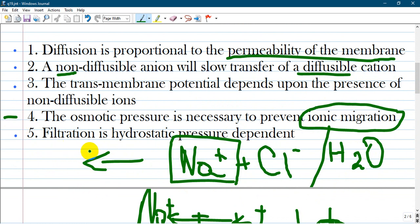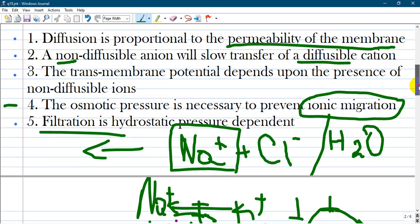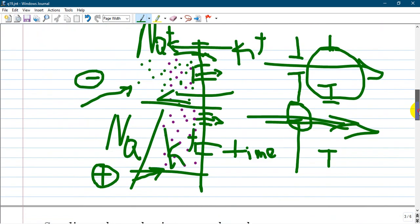Option number five: filtration is hydrostatic pressure dependent. Of course, as you know, one great example would be renal glomeruli where occurs filtration and secretion of urine.